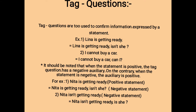The third type of question according to function is tag questions. Tag questions are used to confirm information expressed by a statement. They are similar in function to yes-no questions. However, in tag questions, we do not move the auxiliary to the front. On the contrary, the auxiliary is duplicated and placed at the end of the statement, followed by a pronoun representing the subject. For example, 'Lina is getting ready, isn't she?'